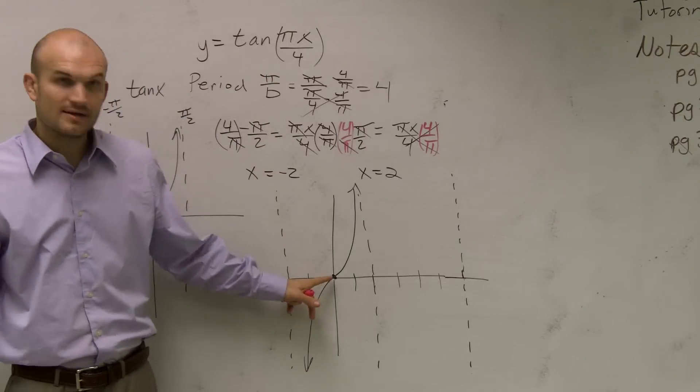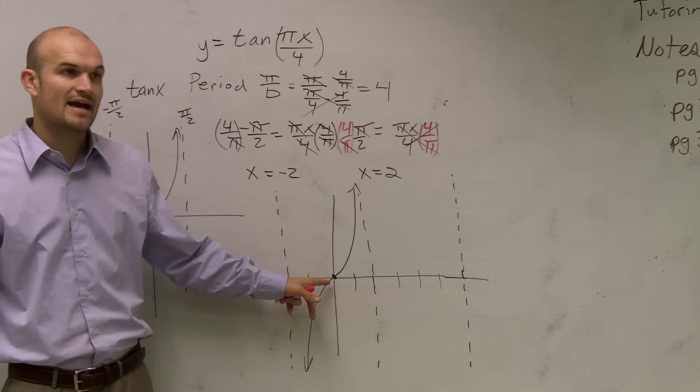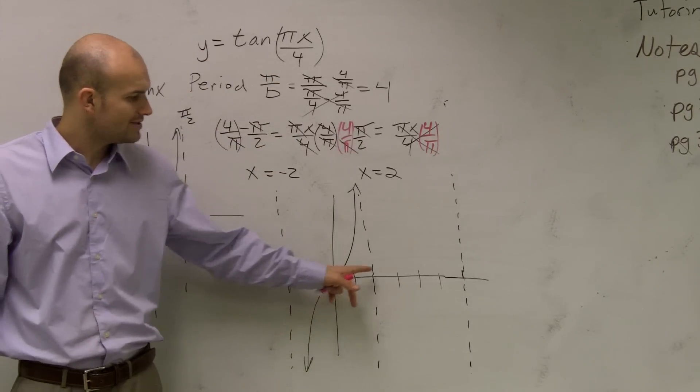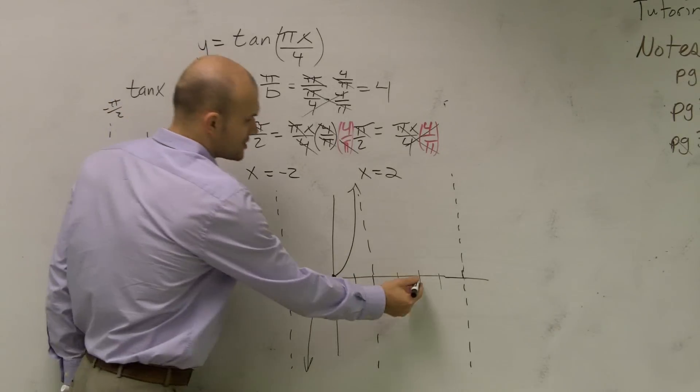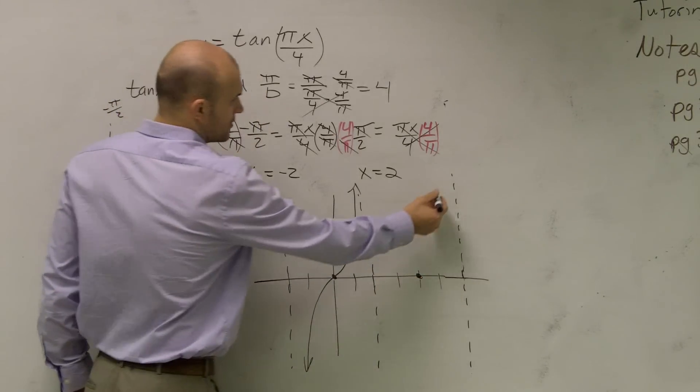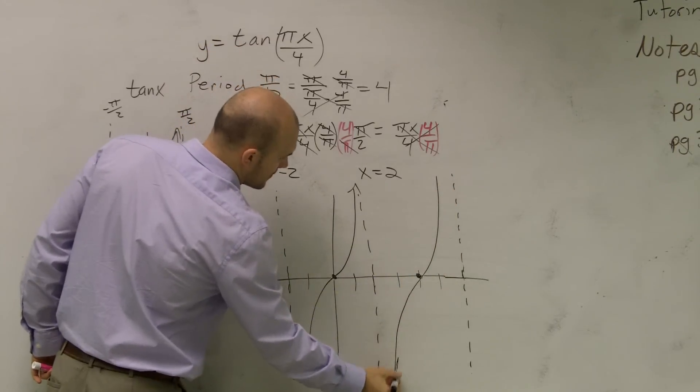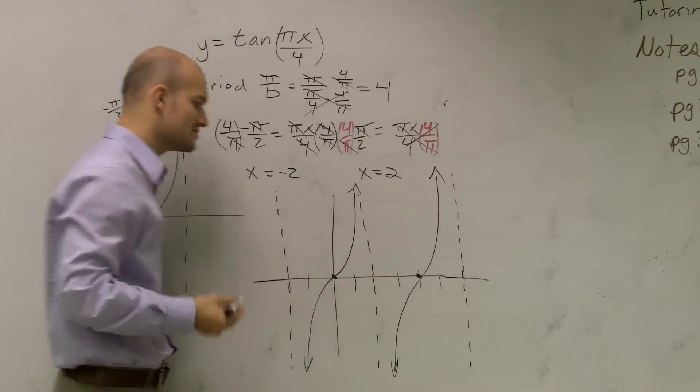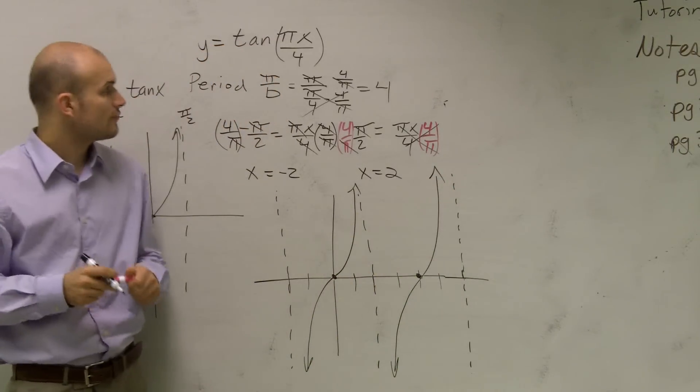To find the next intercept, you just add 4 to your original intercept: 1, 2, 3, 4. Notice it's halfway between your two asymptotes. So I'll just graph the same one. That is two periods for the tangent function.